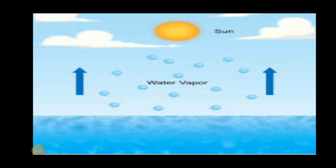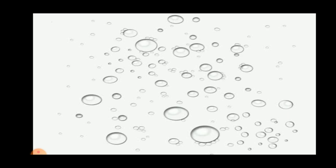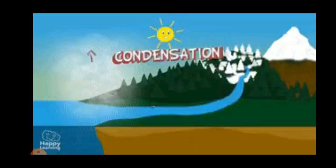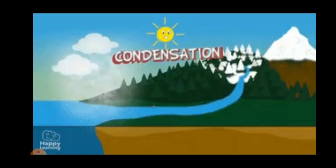Step 2: The water vapor reaches the colder upper layer of the sky. It cools down and condenses to form water droplets. Remember, students, the process of water vapor changing into water is called condensation. These tiny droplets combine together to form clouds.